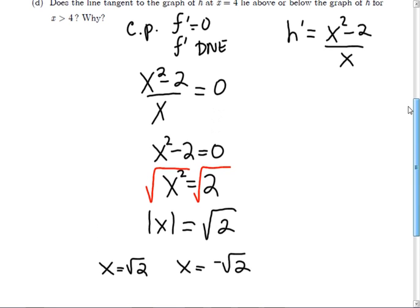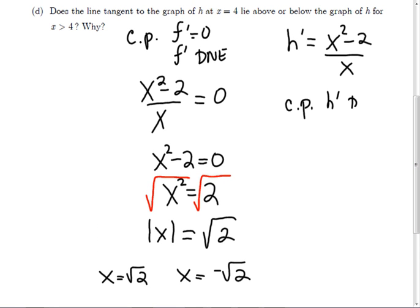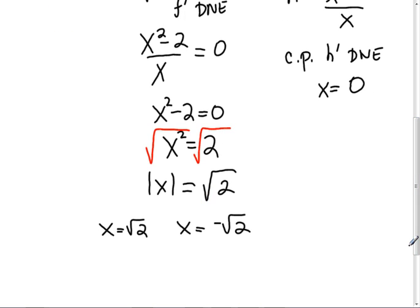There is another critical point: when h′ does not exist, which occurs at x equals 0. If you don't have that, you can't find the max/mins because you can't check your signs. Put those on a number line: zero, square root of 2, and negative square root of 2. This number line itself gets you no points under current AP rules, but you need it. Test regions: try x = 10, try x = 1, try x = −1.